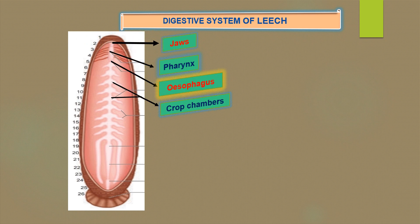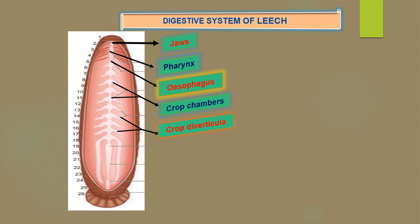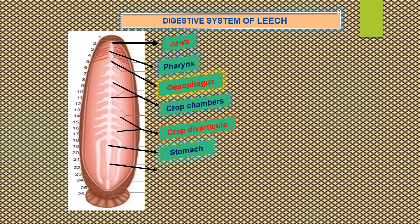The crop's diverticula can store a large amount of blood, which is slowly digested. The last chamber of the crop opens into the stomach. The stomach leads into the intestine, which is a small straight tube that opens into the rectum. The rectum opens to the exterior by the anus.